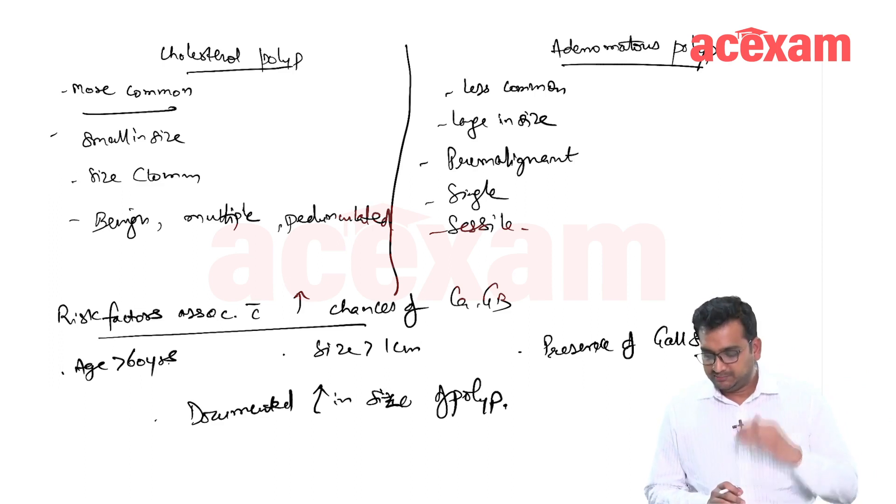If there is presence of a single polyp, which is large in size associated with stones, we should go for cholecystectomy. And if there is documented increase in size on ultrasound or on CT, we should go ahead with a cholecystectomy.